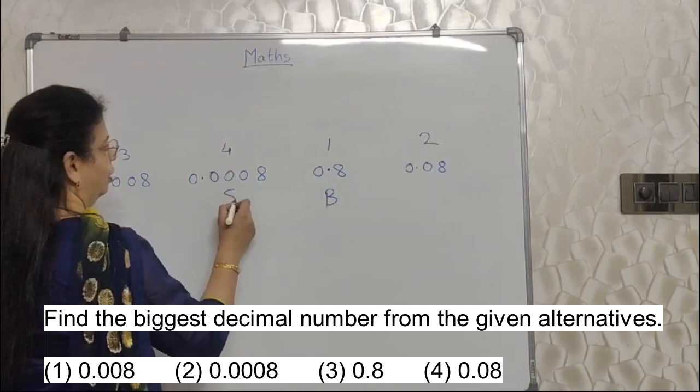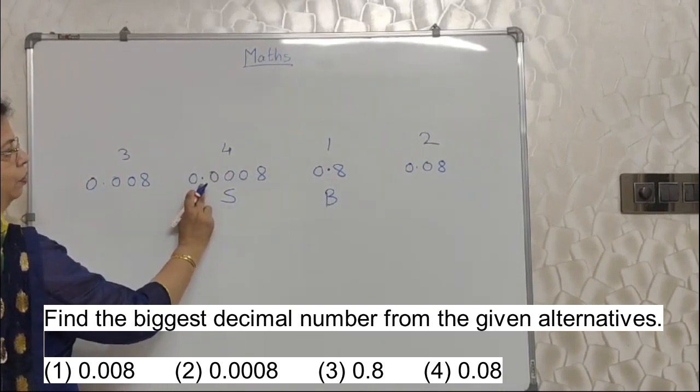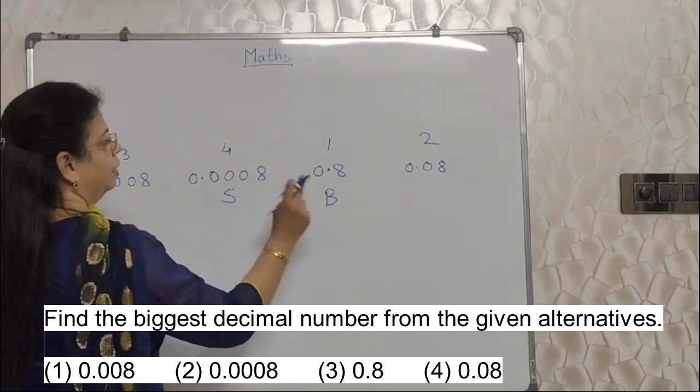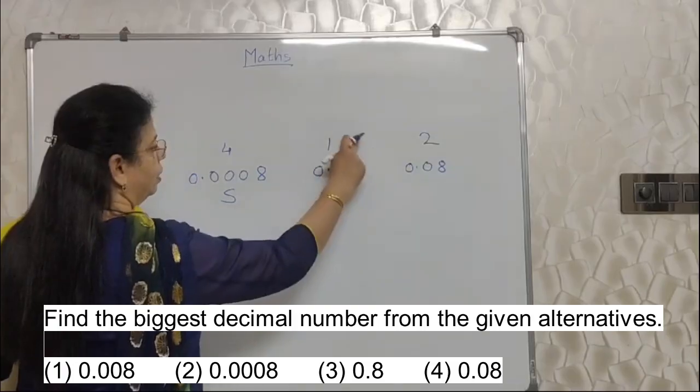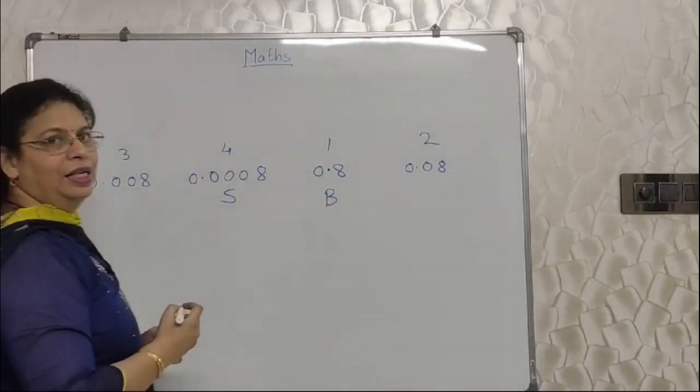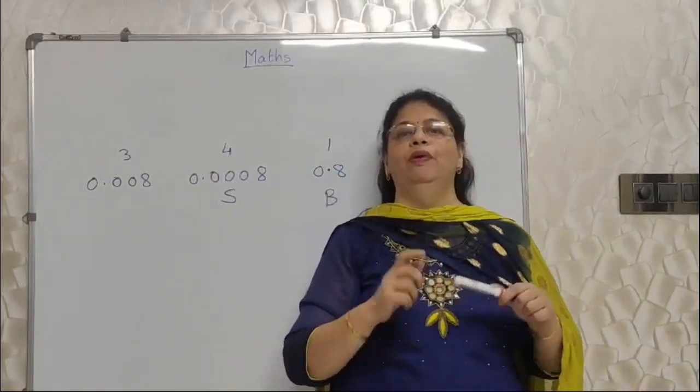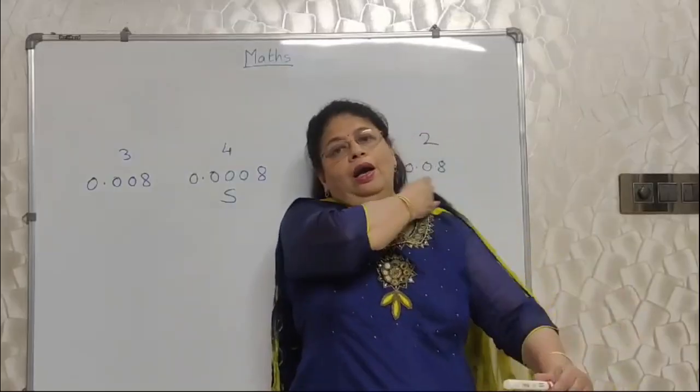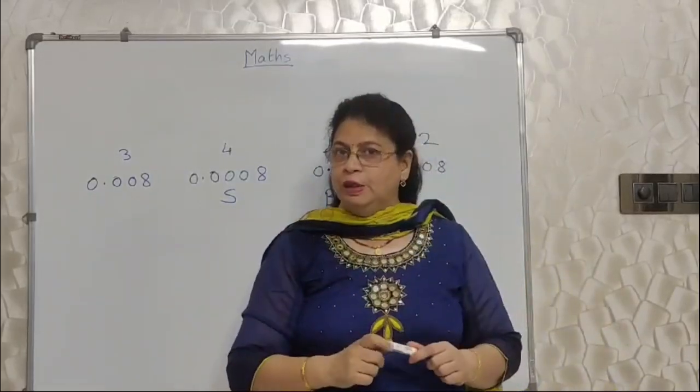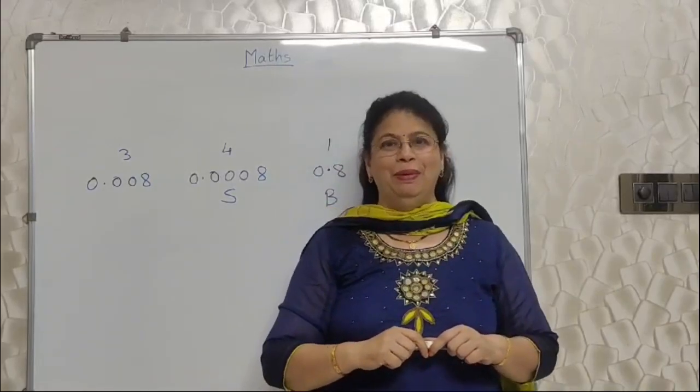Obviously which is the smallest number? This. Because it is far away from the decimal. Baaki sab toh 0 hi hai. So this is the smallest number. This is the biggest number. In this particular sum, they have asked us to find out the biggest decimal. So this is the answer. Isn't it easy? Only thing is, your concepts about decimal fractions should be very clear. Again, I would like to tell you, in my video, I have properly explained rules about decimal fractions. Please see. Chalo, aage badate hai.